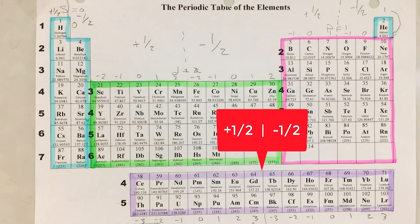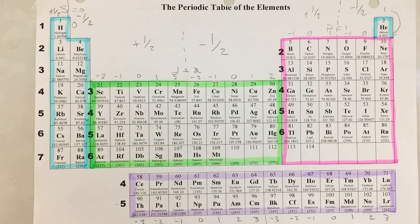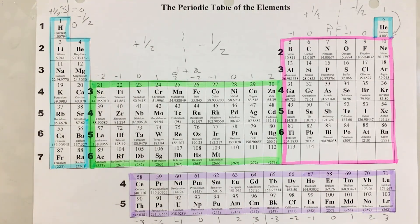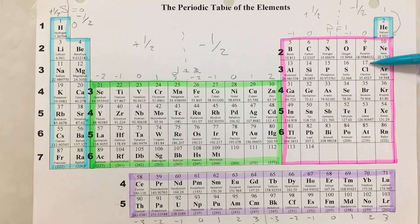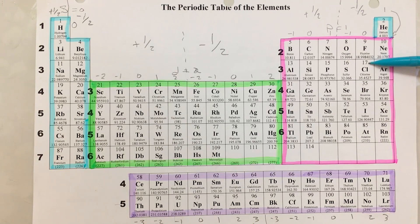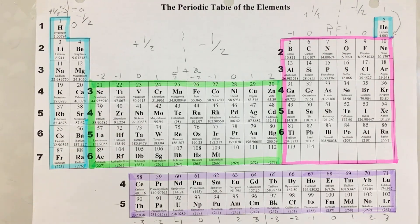I encourage you to look back at the intro to quantum numbers to understand how they work, but with the periodic table annotated this way, you can put your finger on any electron and determine its quantum numbers. Remember: when asked for the four quantum numbers for chlorine, there are 17 electrons, each with a unique set of four quantum numbers — that's the Pauli exclusion principle. What we really mean is give me the quantum numbers for the 17th electron. Hopefully this has been helpful!